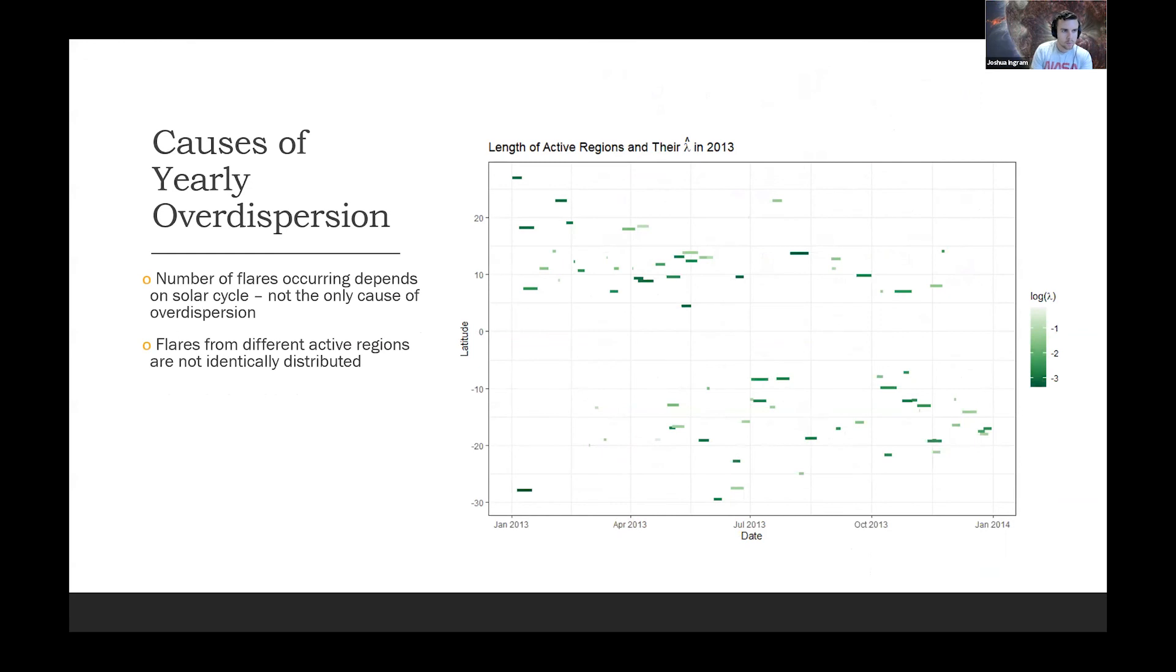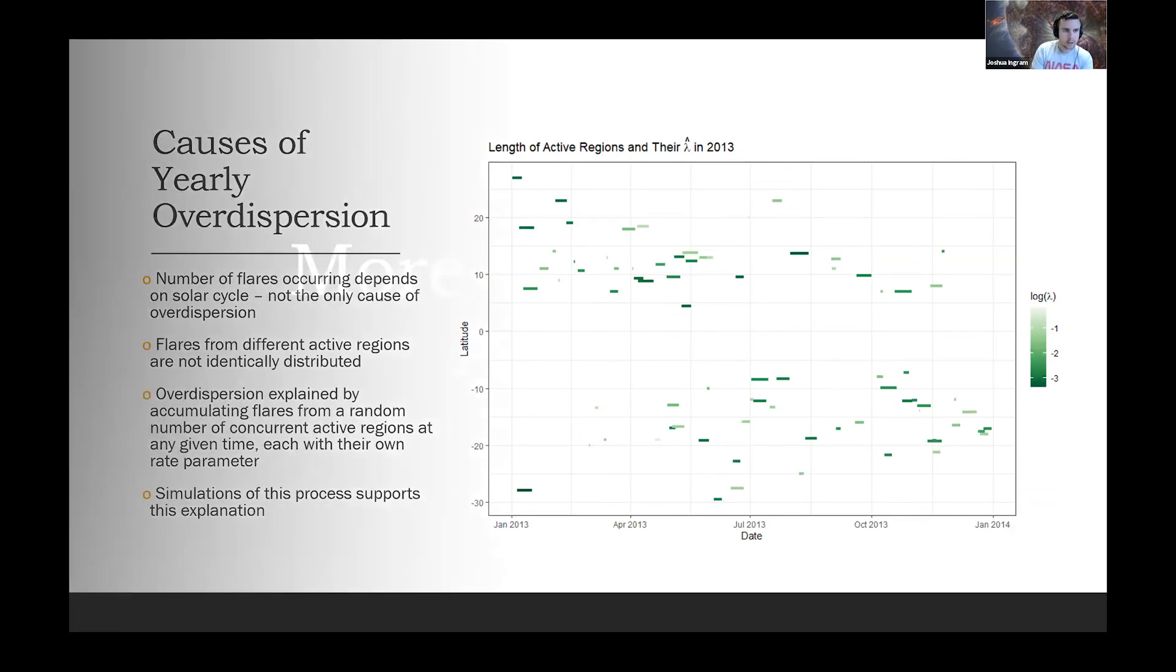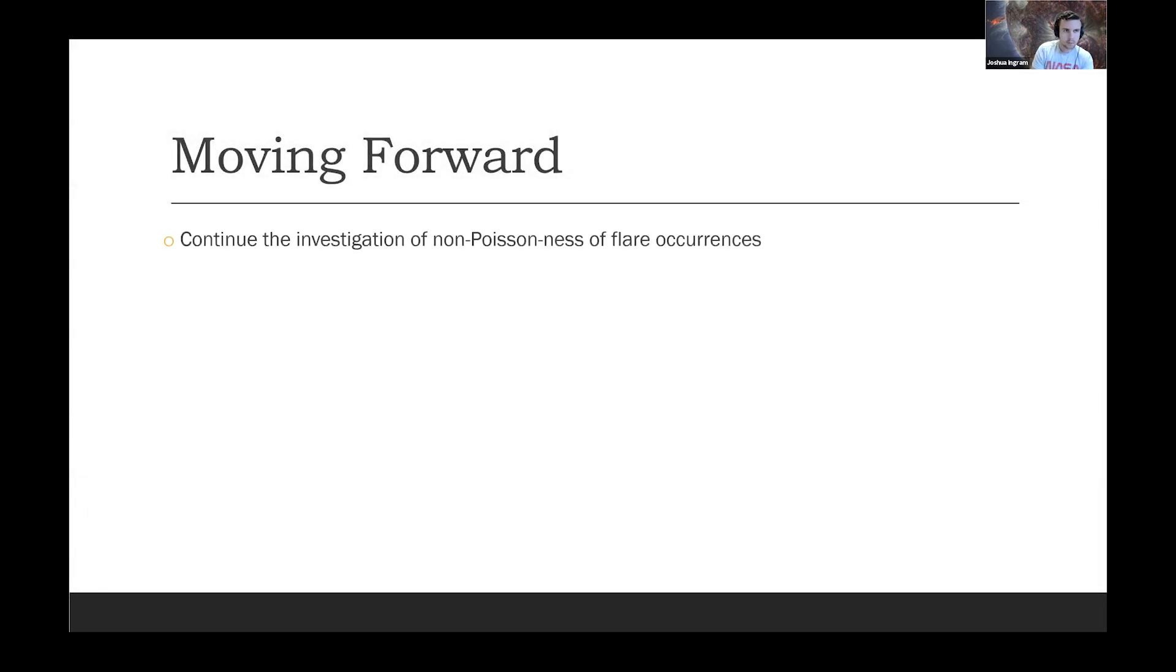This overdispersion is caused by two main reasons. In the yearly data, it's because there's this overlapping. Flares from different active regions have their own rate parameters. They occur at their own rates, so they're not identically distributed between active regions. Also within different active regions, they may come from a different active region, but each with their own rate parameter, and they're overlapping. So constantly the yearly rate is changing within the year. Within the active regions, this is likely caused by the fact that flares are not independent of each other. They're occurring close in time and spatially, and one flare going off in an active region could affect the next flare going off. Simulation supports some of these explanations as well.